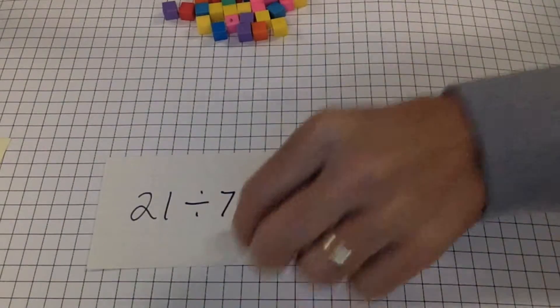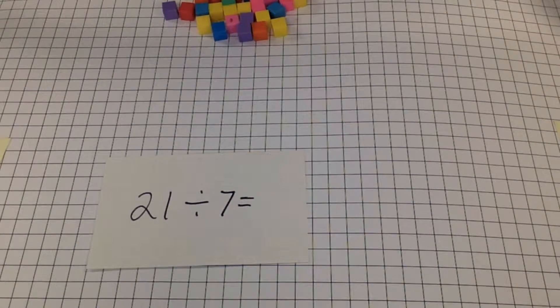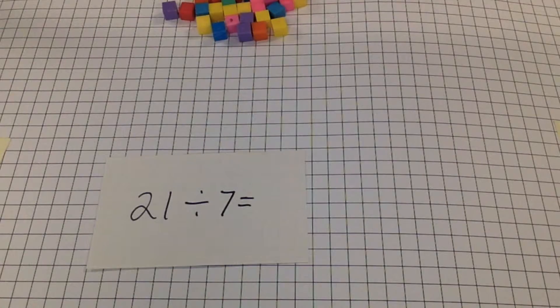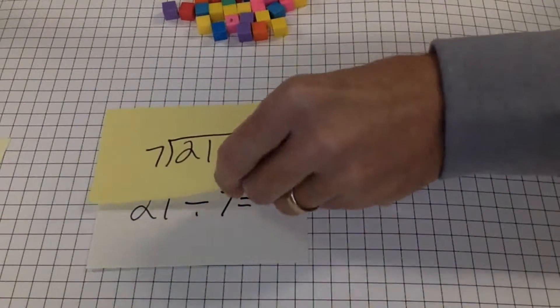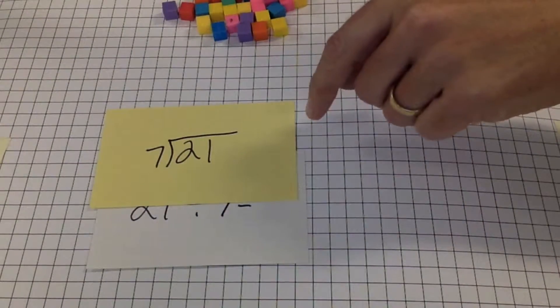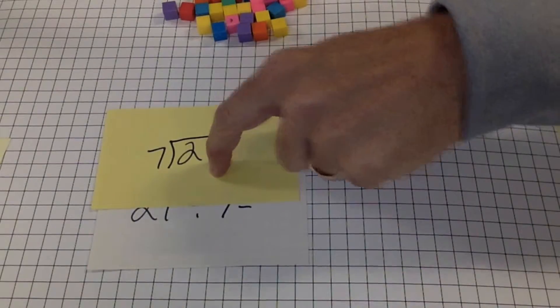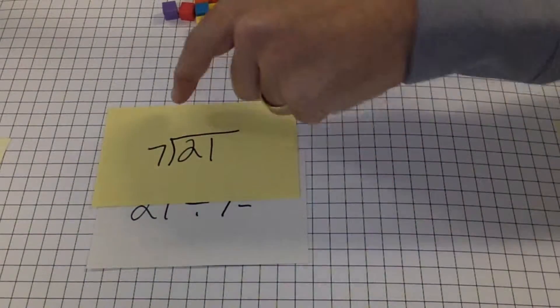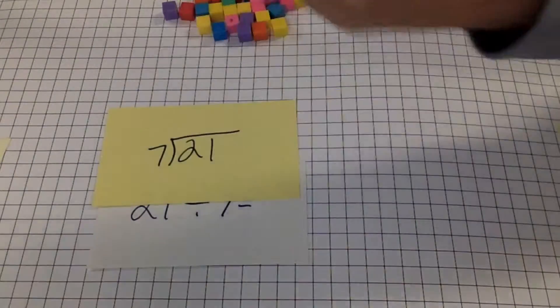The example problem I'm going to do for you is 21 divided by 7. You might see it as 21 divided by 7 with the divisor on the outside and the dividend on the inside and then the quotient, your answer, will be up on top.